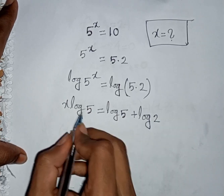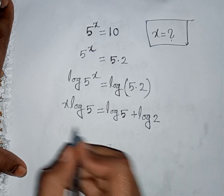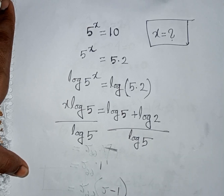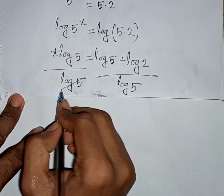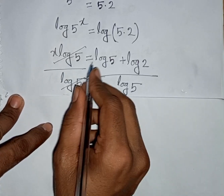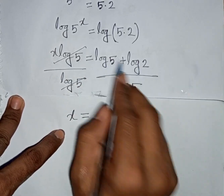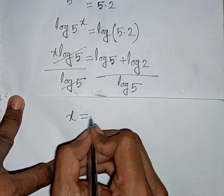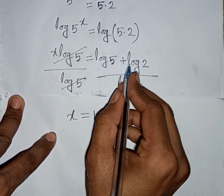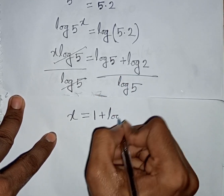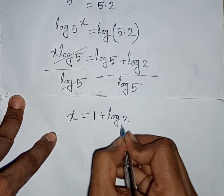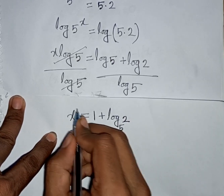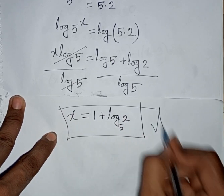We need the value of x, so divide by log 5 on both sides. This log 5 divided by log 5 will be cancelled. So x equals log 5 divided by log 5, plus log 2 divided by log 5. That means 1 plus log 2 divided by log 5, which equals 1 plus log base 5 of 2. This is the value of x, and this is our final answer.